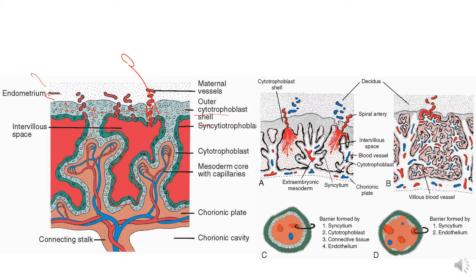Most of the early tertiary chorionic villi do not show side branching and extend all the way from the chorionic plate to the decidua basalis. These are known as stem villi or anchoring villi, because their tips are firmly attached to the maternal tissue. During the second month, these stem villi develop many side branches, resulting in formation of a large number of free villi projecting into the intervillous space, presenting almost 11 square meters of surface area for exchange between maternal and fetal blood.